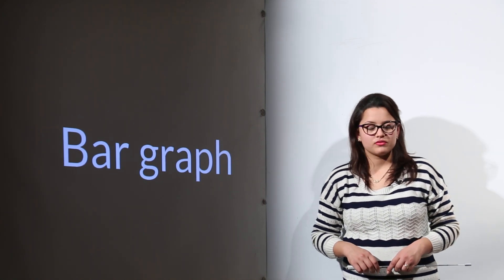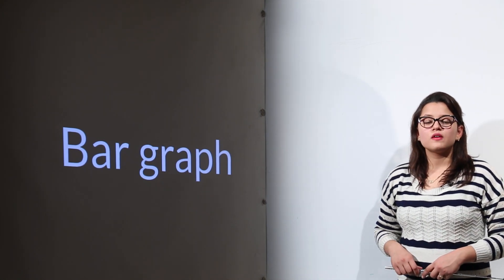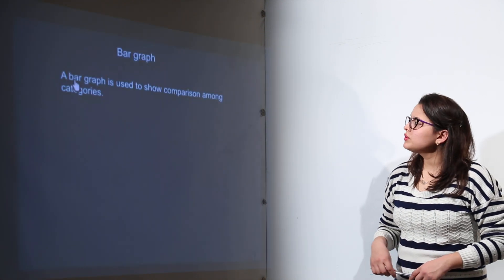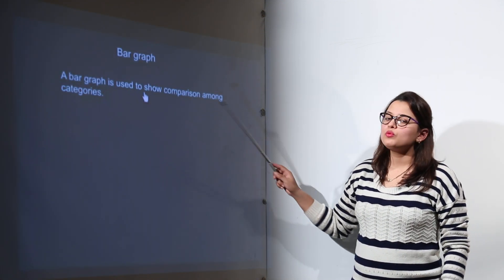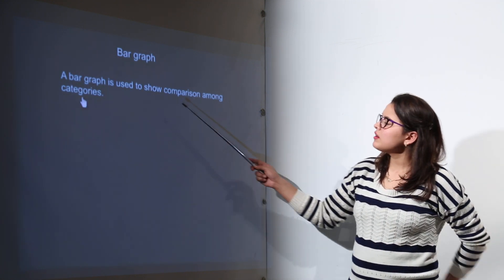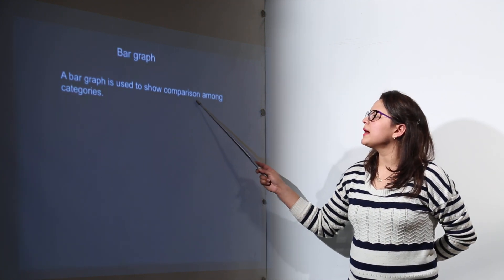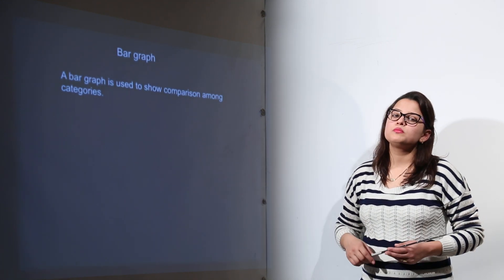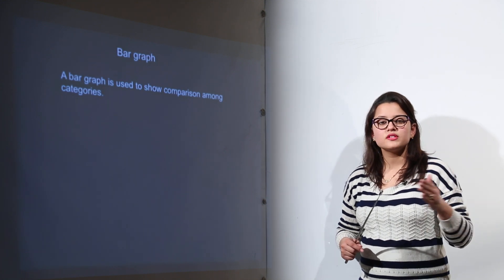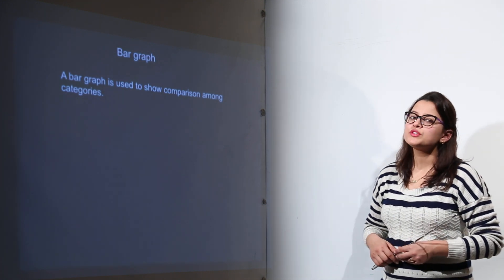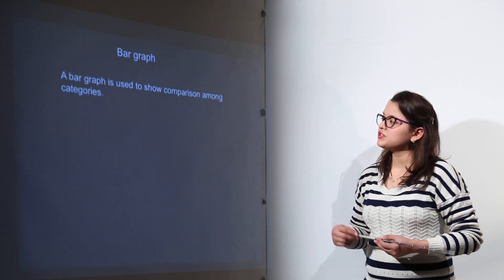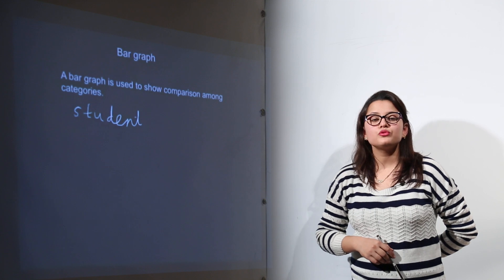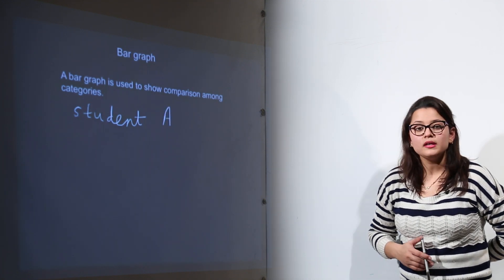Let us do bar graphs now. For bar graphs we will be using graph sheets. Before using graph sheets, let me tell you what exactly a bar graph means. A bar graph is basically used to show comparison among different categories. Categories could be anything, like you can compare marks of different subjects. For that we use the bar graph representation. Now I am taking up an example to show you how bar graphs are being made.